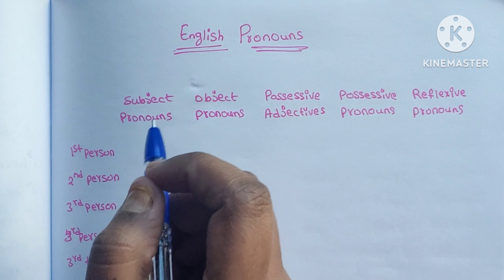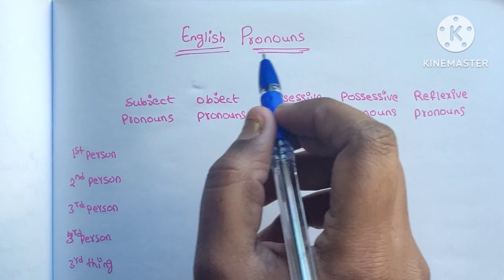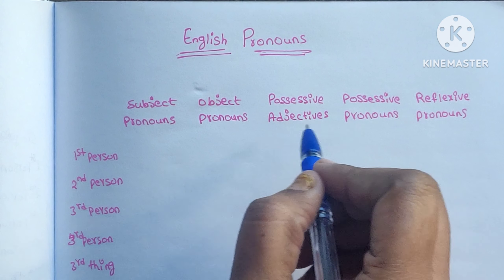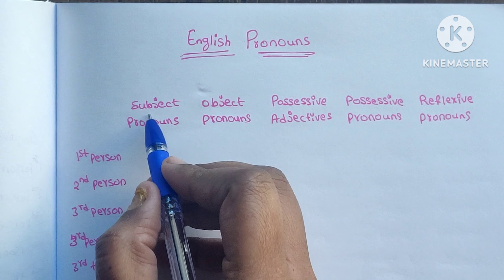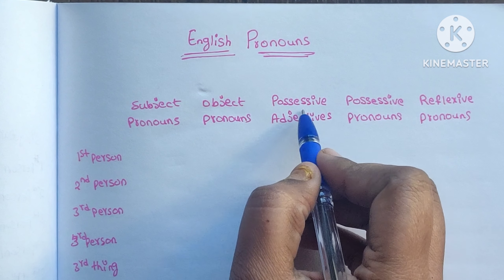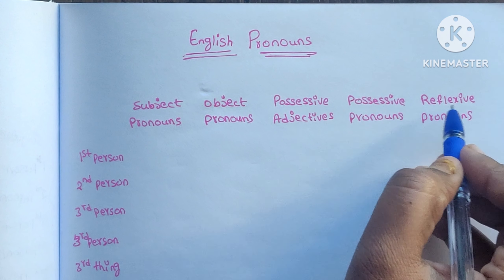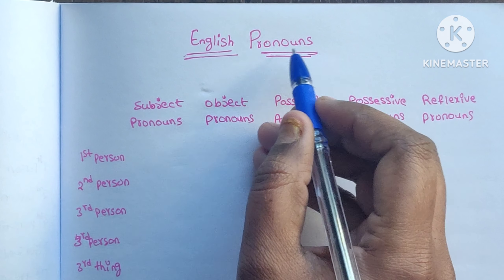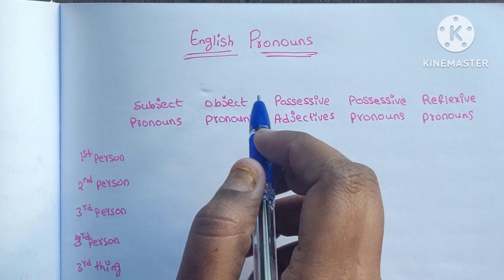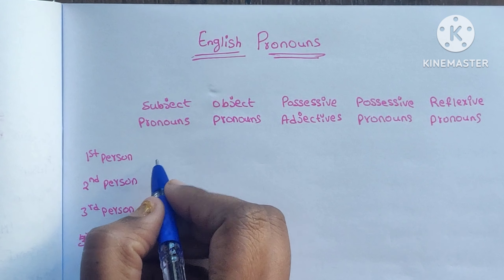Hello everyone, welcome back to my channel. Today we are going to learn English pronouns. Here we have five types of pronouns: subject pronouns, object pronouns, possessive adjectives, possessive pronouns, and reflexive pronouns. A pronoun is a word that is used in the place of a noun.